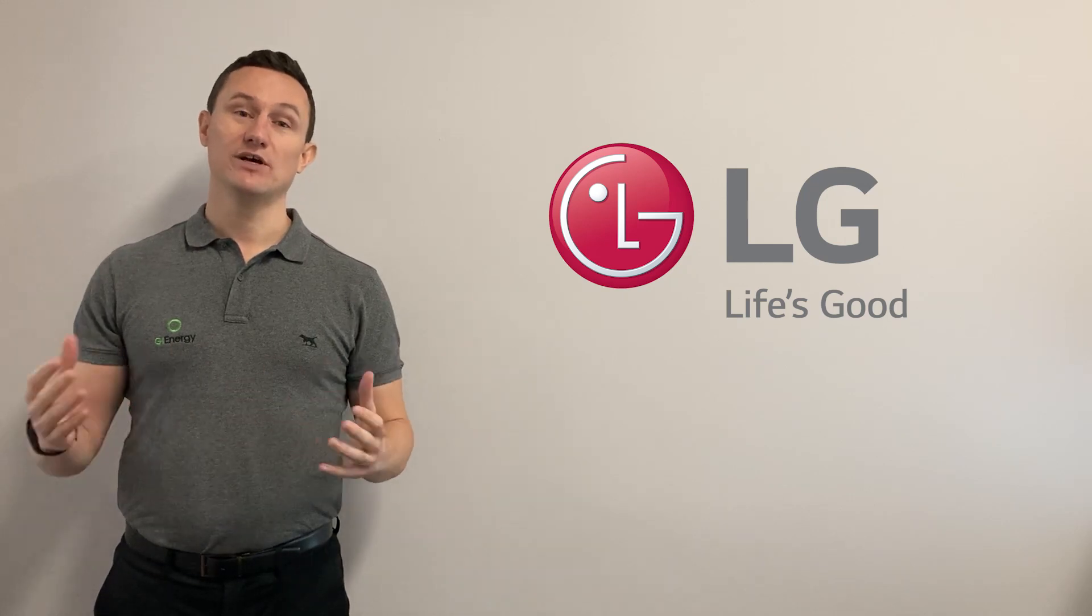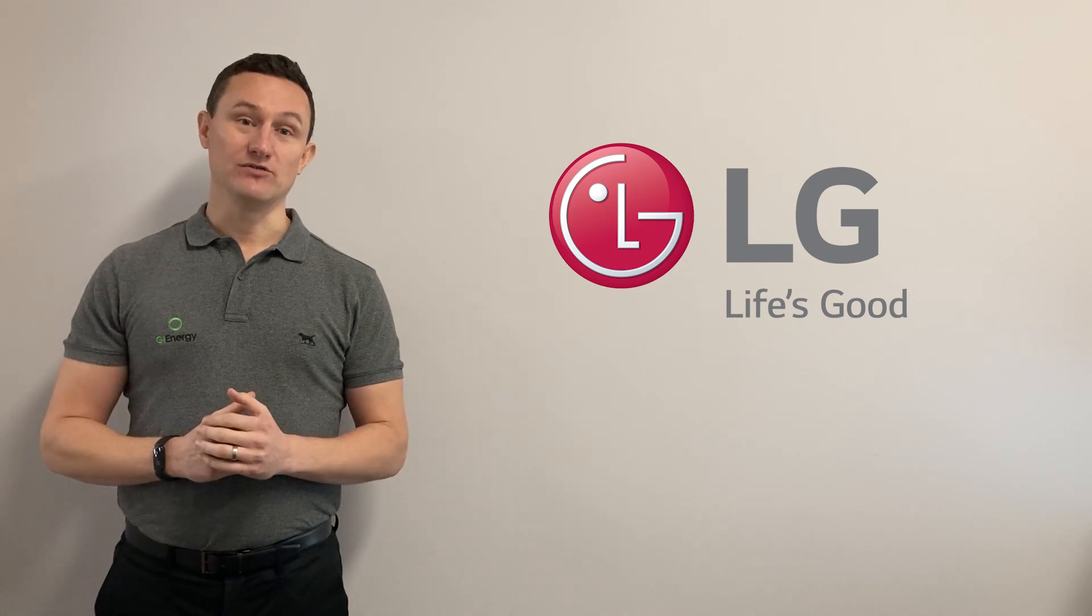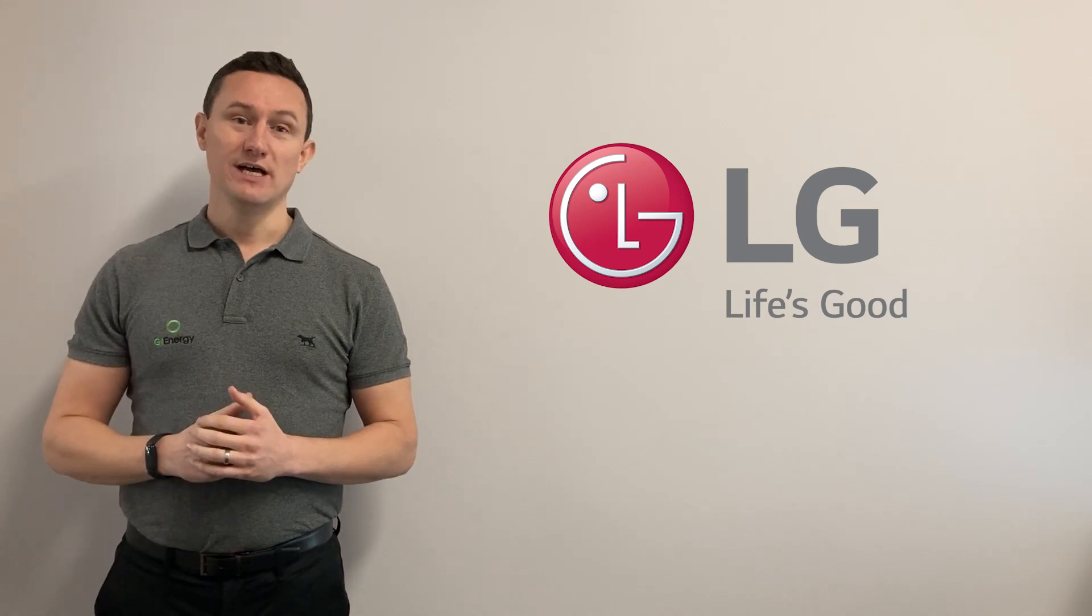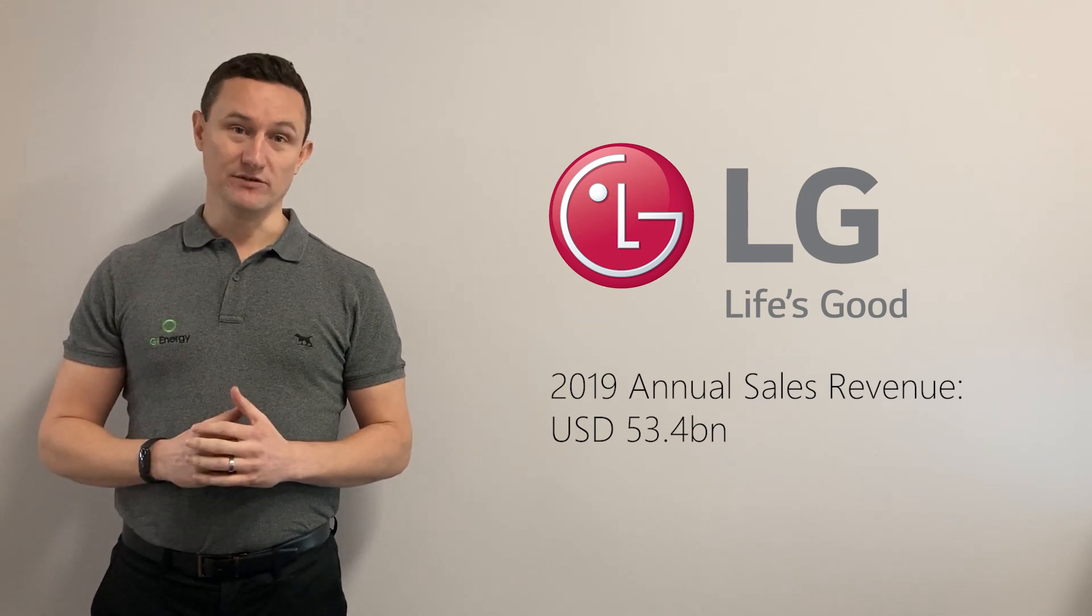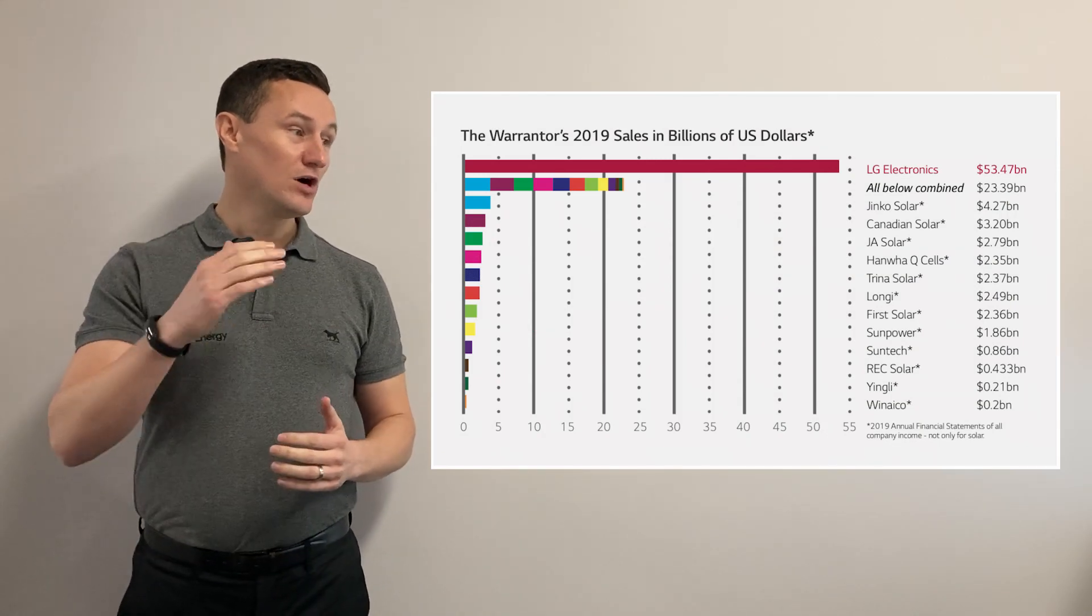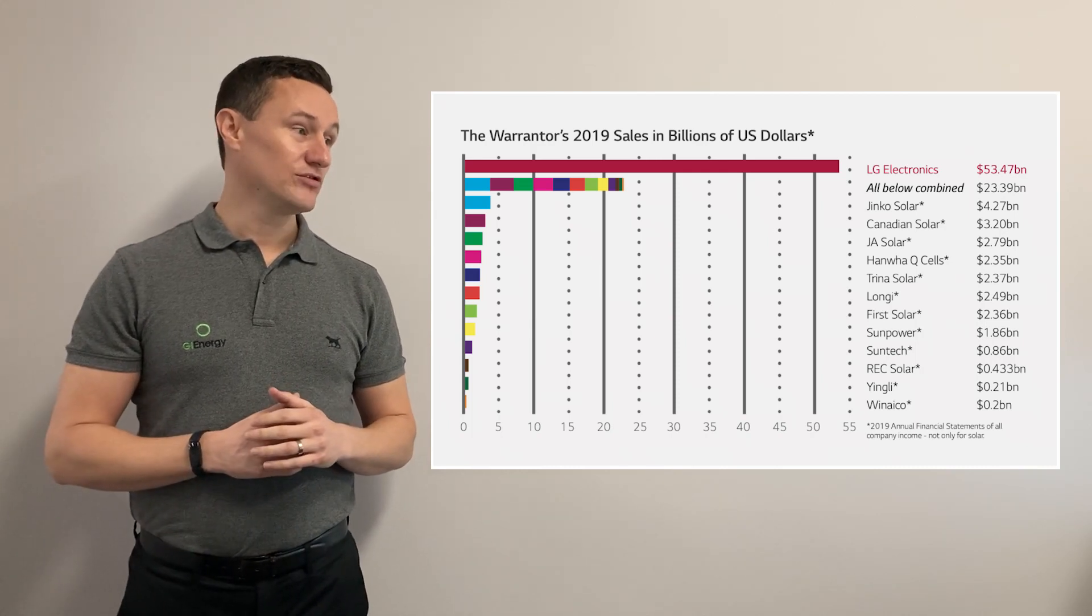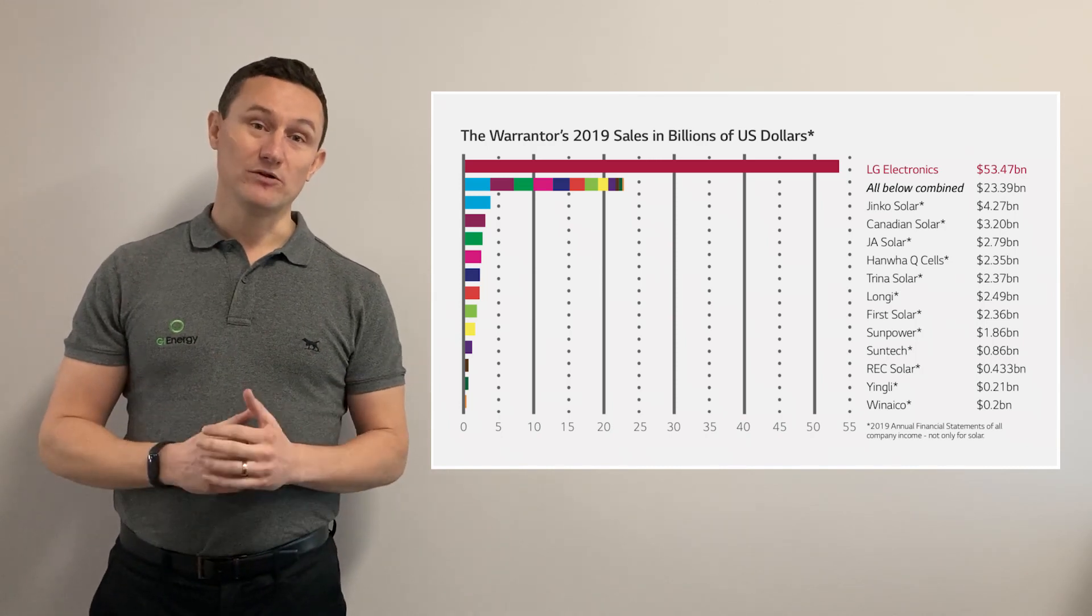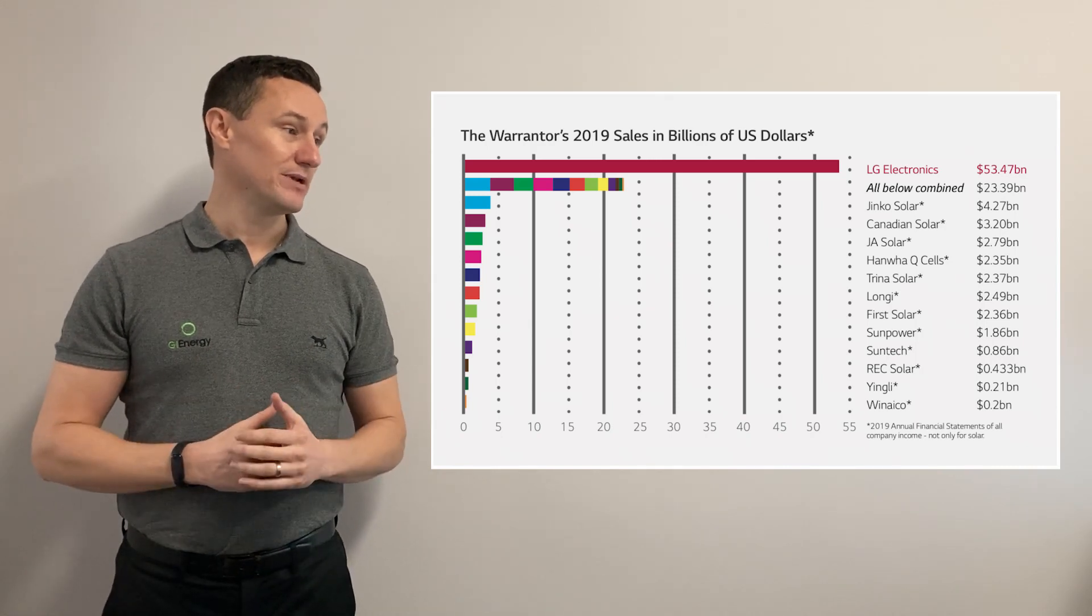Most solar panel names you haven't heard of. So LG, obviously being that big brand name, carries quite a lot of weight there straight away. Just to give you some perspective on how large LG are as a company, their annual sales revenue was $53.4 billion US dollars. To put that in perspective, we have a chart here which shows a lot of common solar panels that are sold here in Australia and around the world.